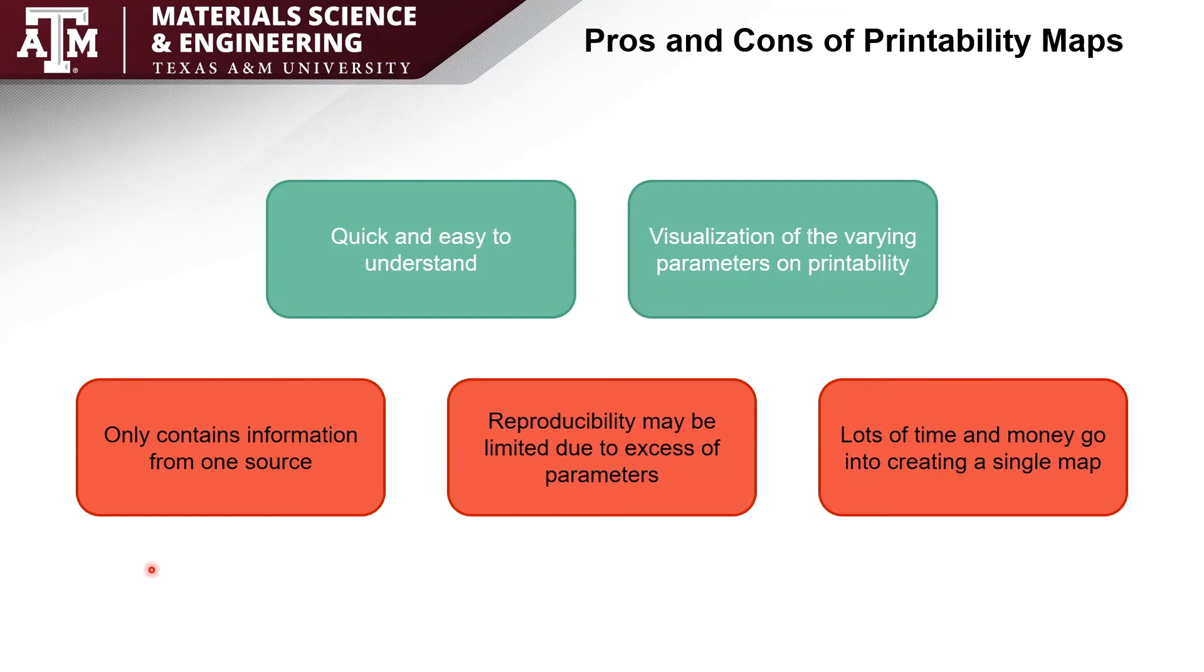But they do have a few setbacks. In most cases they only contain information from one source. This can cause complications with it being a reputable or unreputable source. Reproducibility of these maps can be very difficult due to the large amount of parameters and the effects that they have on each other that may not be listed in the article or literature. And a lot of time and money can go into creating a single map.